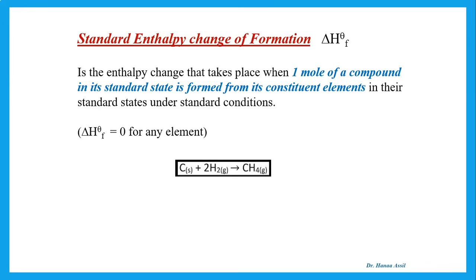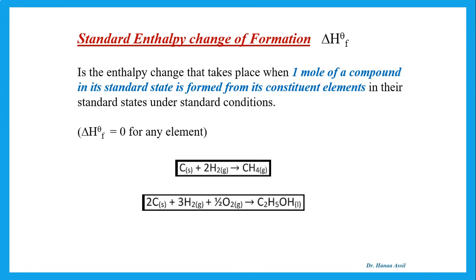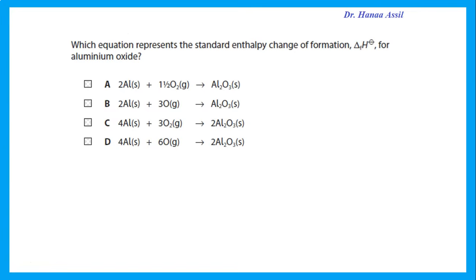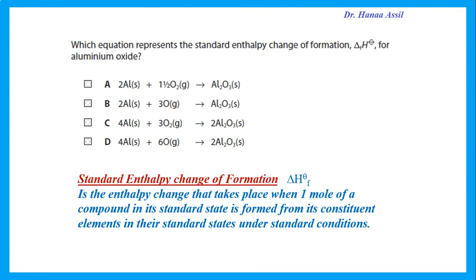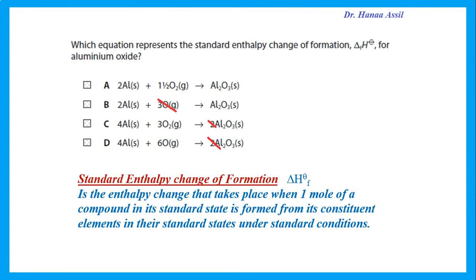For example, the Delta H for a reaction like this would be the Delta H of formation of methane or ethanol. If we say which equation represents the standard enthalpy change of formation for aluminium oxide — the definition says one mole of a compound is formed. So I should be forming one mole, not two moles — so C and D are wrong. And I want to form it from its constituents in their standard state: aluminium as a solid and O2 as a gas, not just O. So the answer should be A.